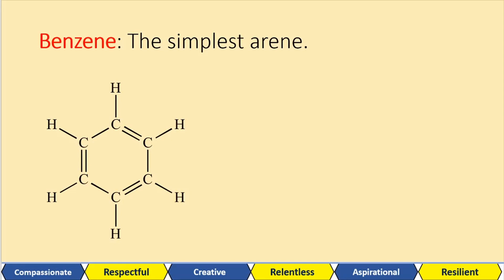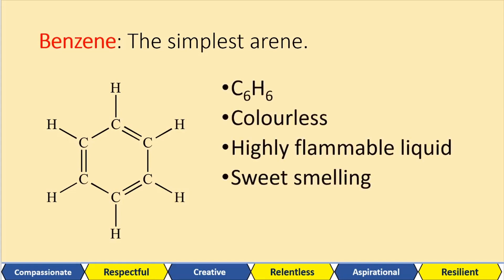Benzene is actually the simplest arene that you can have. Here are some notes that you should take down. This is its structure — it's C6H6. It's colorless, highly flammable, and it's a liquid at room temperature and pressure. And it's very sweet smelling as well.